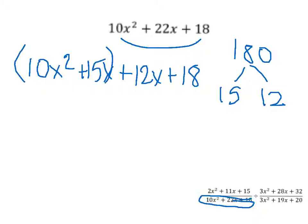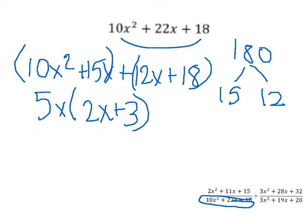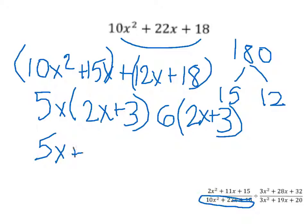You group it by putting parentheses around each pair. Then factor out the greatest common factor out of each group: 5x from the first group, which leaves (2x + 3), and then factor out a 6 from the second group, which also leaves (2x + 3). You combine those to get (5x + 6)(2x + 3).